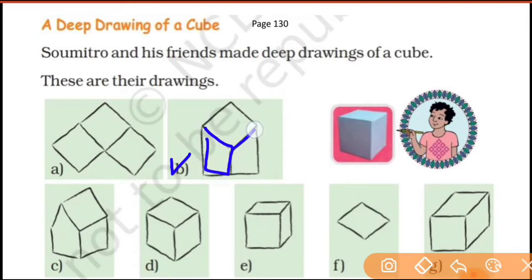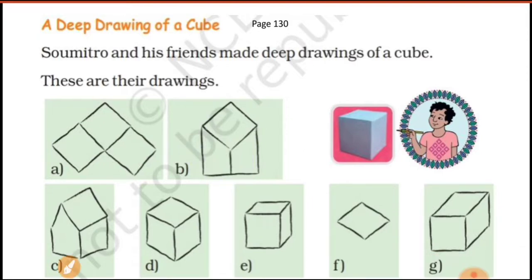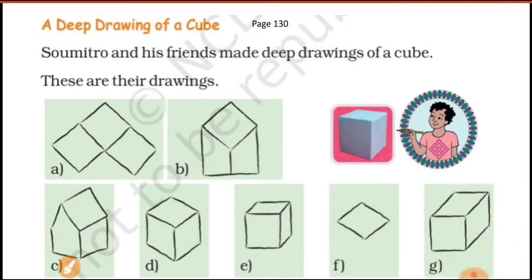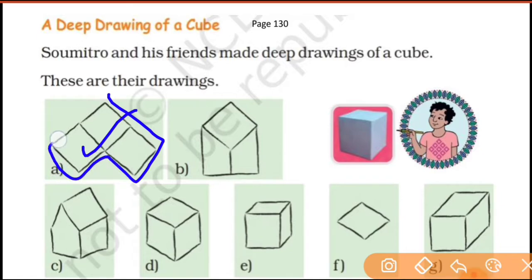Next, number B — again you can see that these two faces are not square. So this is not a correct deep drawing of the cube. Here again it is a 2D shape — a plane shape — so there is no height, only length and width.